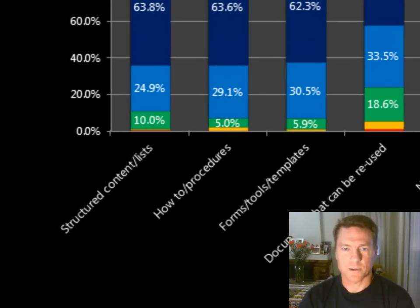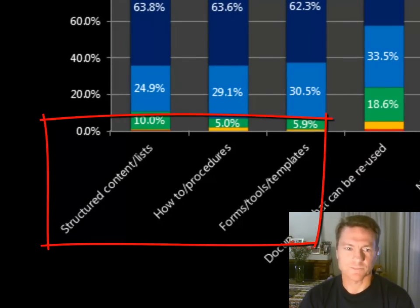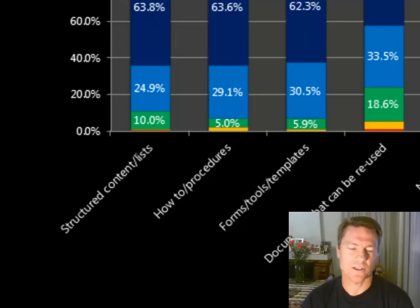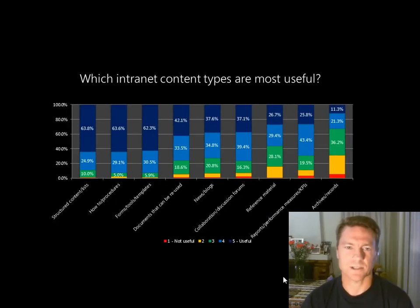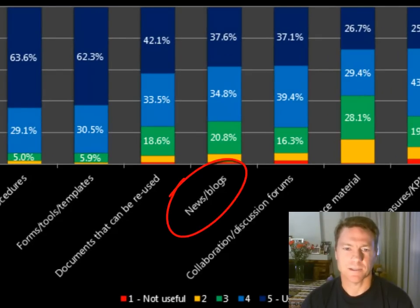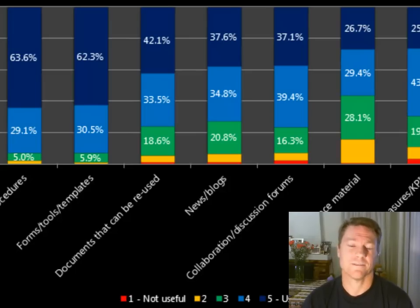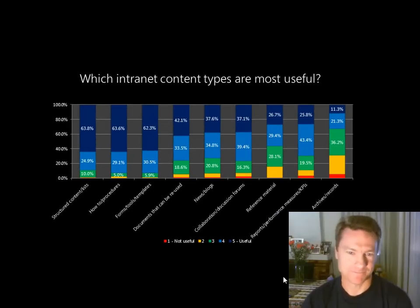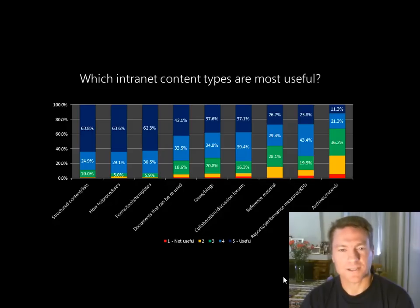Out of those nine content types, three are equally most important: structured content, how-to information, and forms, tools, and templates. Interestingly, news and blogs fall roughly in the middle — yet most SharePoint intranets show nothing but news on the front page. This is unfortunate, as it's perhaps not the most important type. We should consider having common phone numbers or forms on the front page instead.